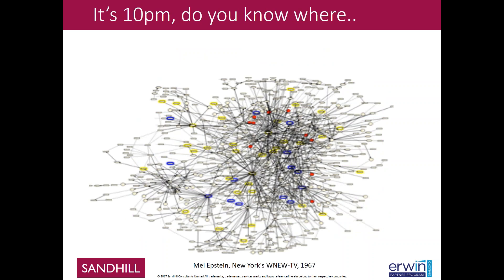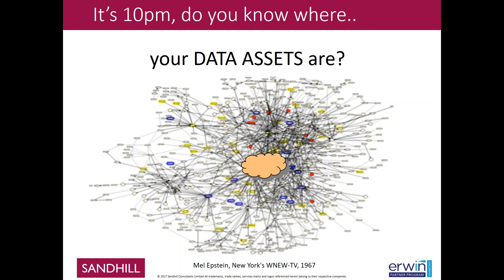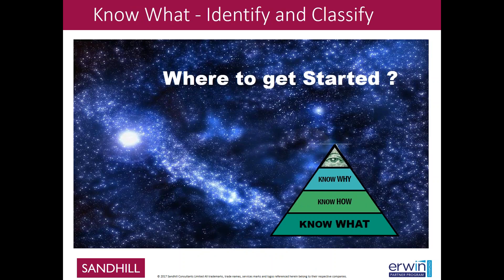We have this ever-growing network of information across all areas within an organization. Data assets are spread across this network in many different places — and do we really know where those data assets are? We're growing in the cloud, so it's beyond just the physical network. With the growth of big data we also have data lakes, bringing an ever-increasing amount of data. We don't want to boil the ocean, so what we want to talk about next is an approach to dealing with knowing what you have — from the notion of identity and classification, and how to get started.